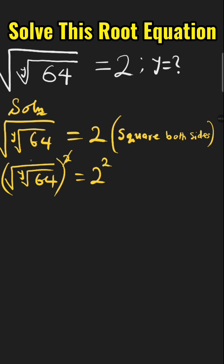Square, we cancel square root left with white root of 64 equals 2 raised to the power of 2.